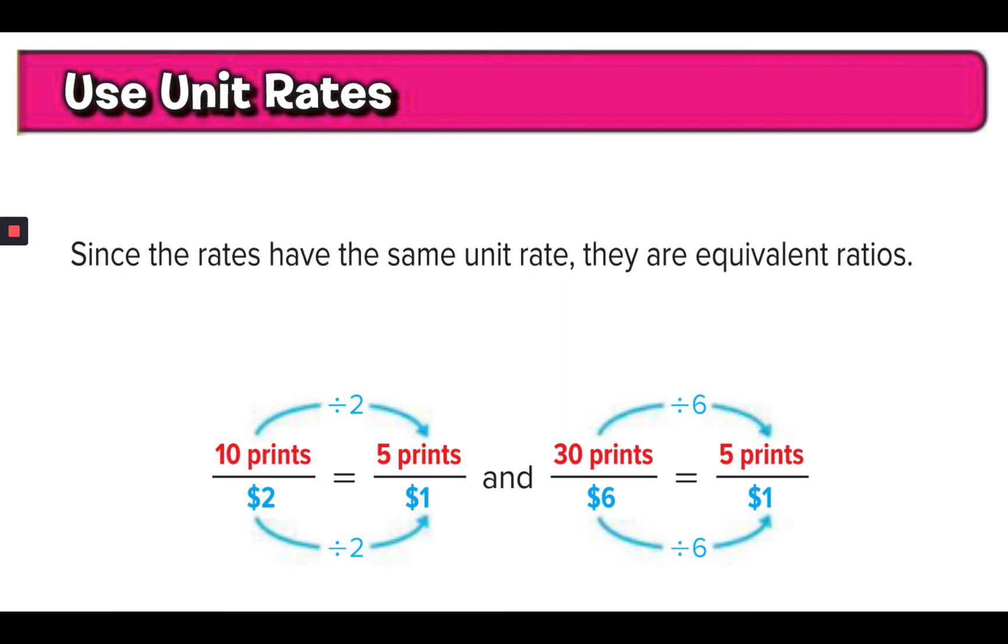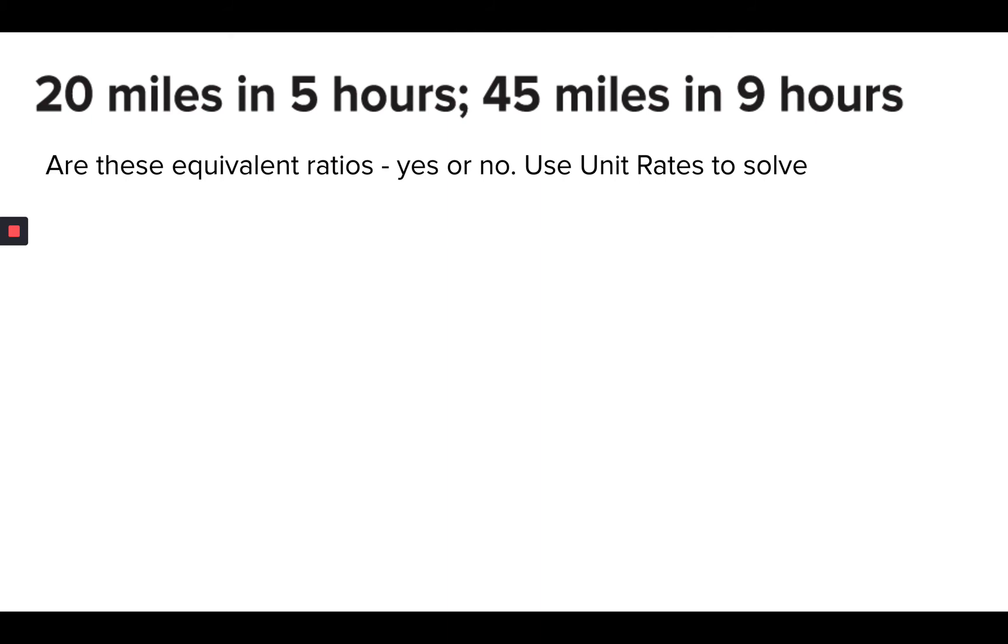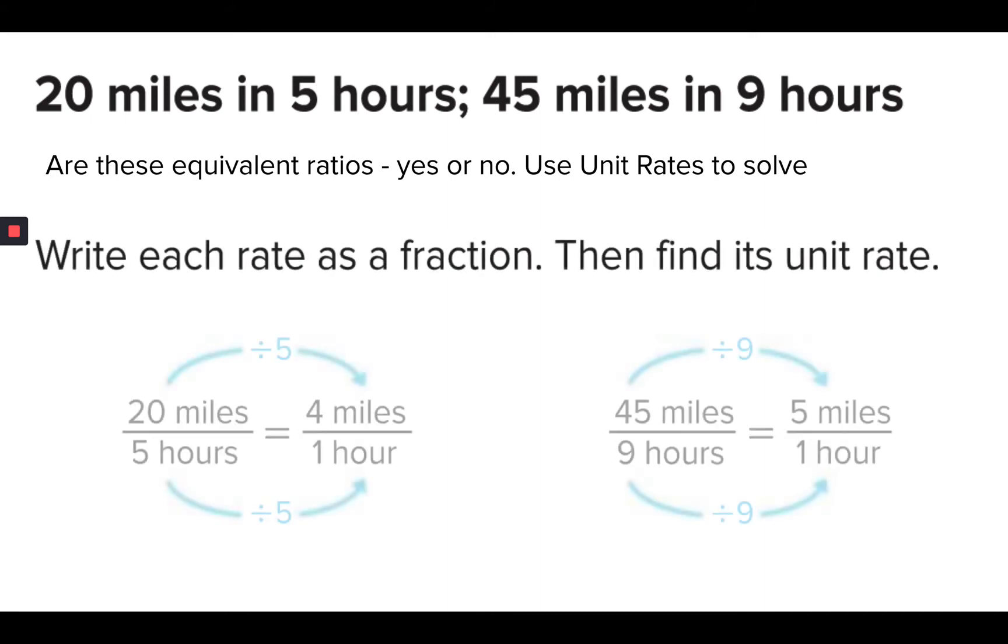Let's look at another one. So 20 miles in 5 hours and 45 miles in 9 hours are these equivalent ratios. That's the question, yes or no. So we're going to write each one as a fraction and find its unit rate.